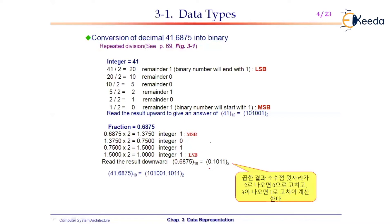Each time you multiply, the digit before the decimal point — either 0 or 1 — is part of the answer. Take the fractional part and multiply by 2 again, writing each integer digit separately.